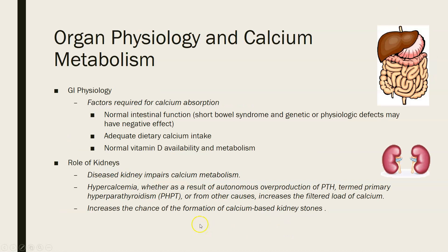For calcium absorption in the GI tract — which occurs in the small intestine — you need normal intestinal function (conditions like short bowel syndrome, inflammatory bowel disorders, or surgeries disrupting small intestine length impair absorption), adequate dietary calcium intake, and sufficient vitamin D. If you are vitamin D deficient, calcium will not be adequately absorbed in the small intestine.